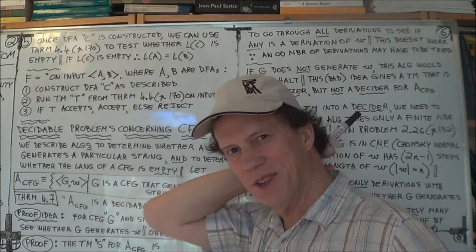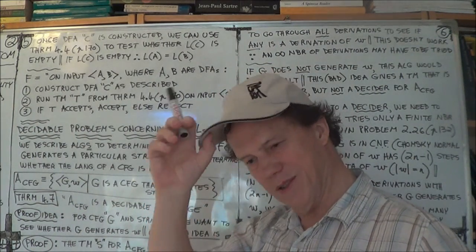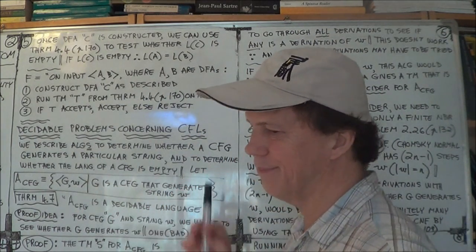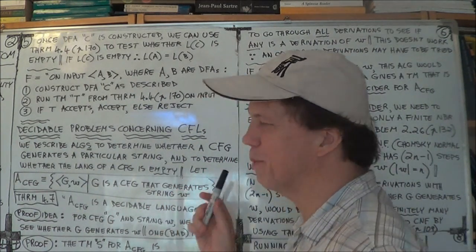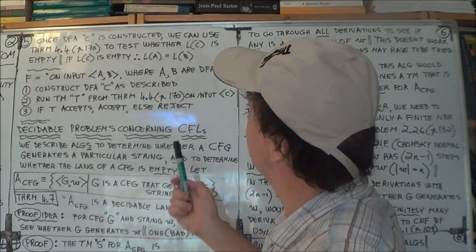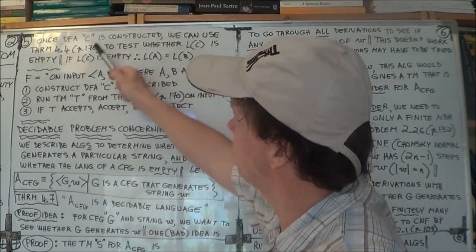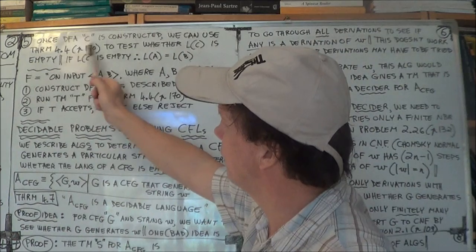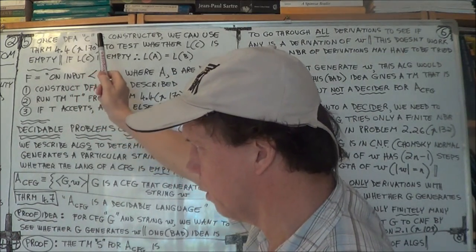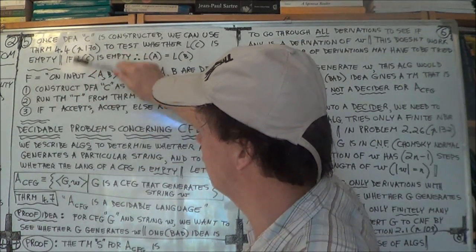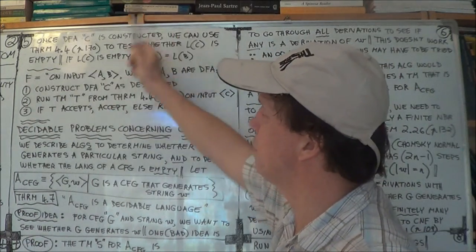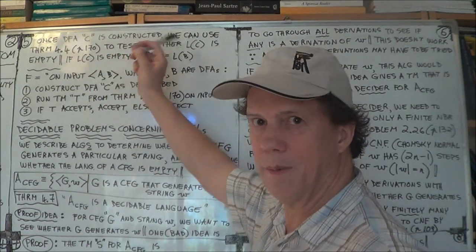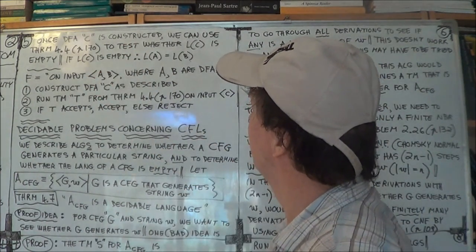So this is very much a high-level description. How you do all that is swept under the carpet, so to speak. Okay, now, so then once you've got that C, you can then use the previous theorem, which was 4.4. We're now proving theorem 4.5, the next one. So just use the previous theorem 4.4, which was on page 170 of your text.